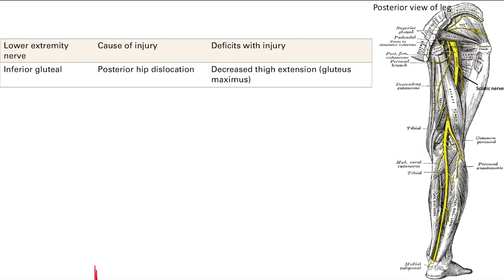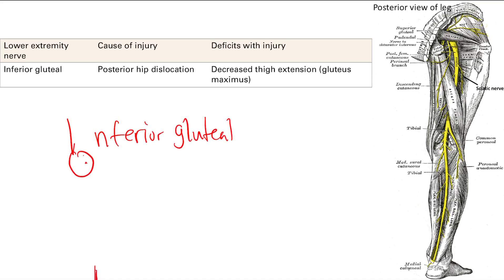Finally, we have the inferior gluteal nerve. This can get damaged by a posterior hip dislocation. When injured, you get decreased thigh extension. An easy way to remember: draw out the figure with the thigh extended — that represents the inferior gluteal nerve function. So if you damage it, you have decreased thigh extension.